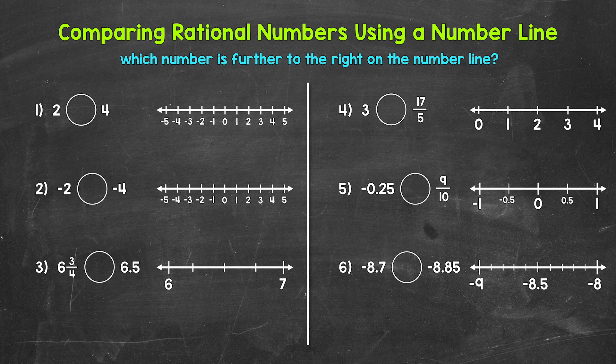So when we compare rational numbers using a number line, the number further to the right on the number line will be greater in value.